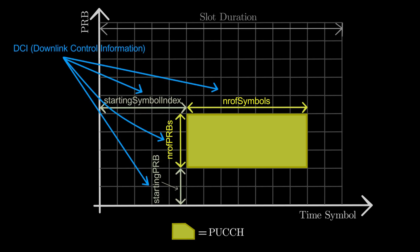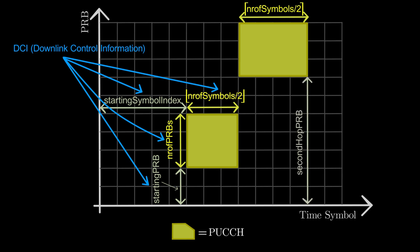Additionally, PUCCH resources can also be frequency hopped, in which case base station indicates PRB location of second hop as second hop PRB.